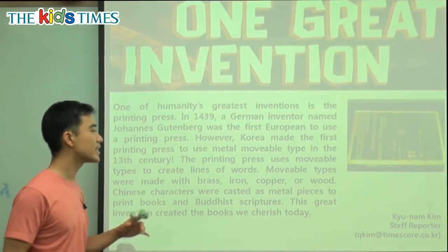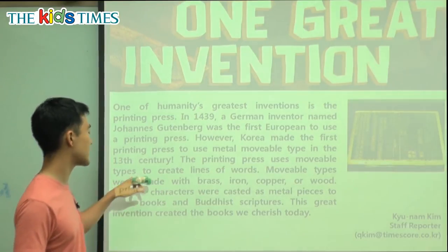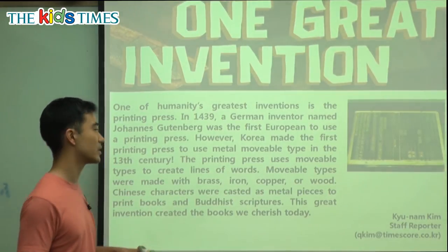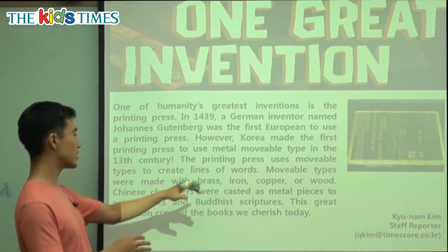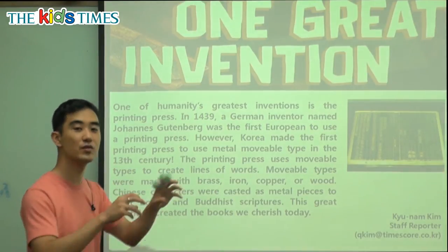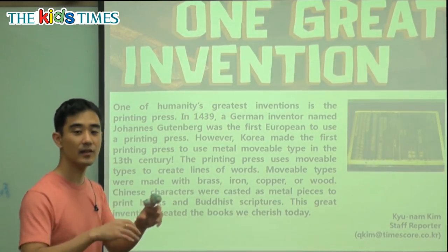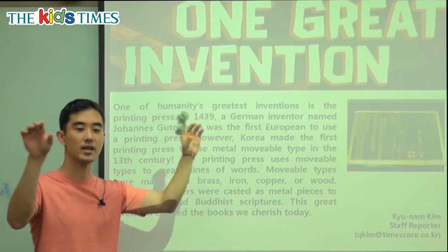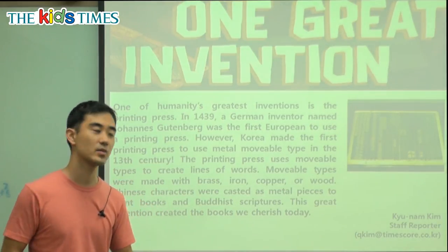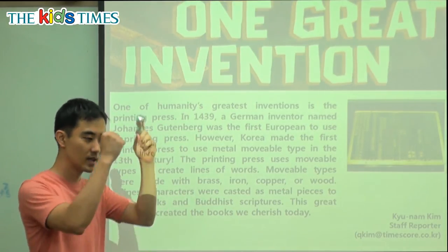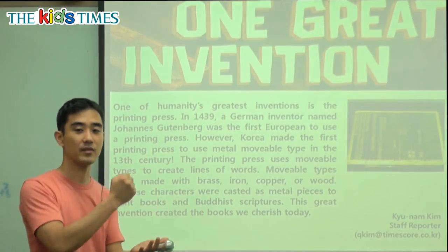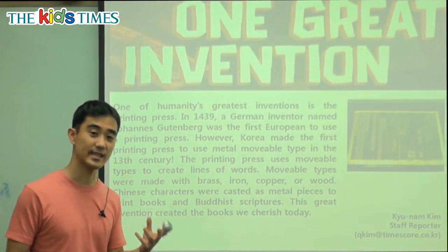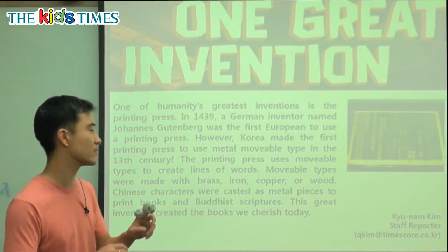The printing press uses movable types to create lines of words. The movable types mean we can move the letters, and when we have them we can make one line, two lines, many lines. It's basically like a stamp — movable type means a stamp that we can use with different letters.